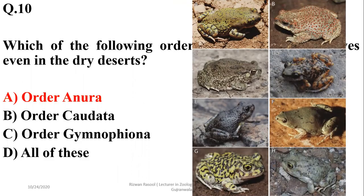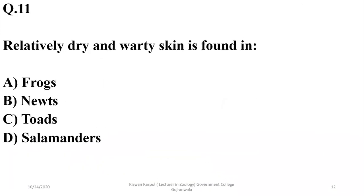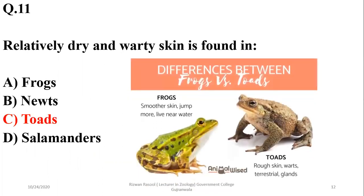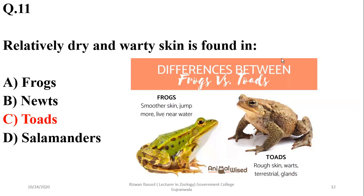Relatively dry and warty skin is found in toads as compared to frogs. Frogs have smoother skin, jump more, and live near water. Toads have rough skin, are terrestrial, and have glands in their skin as well.